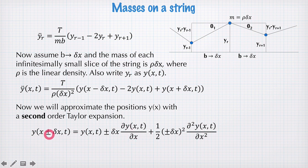So depending on whether you're plus or minus δx here, you get a plus or minus here. Then we have a half times the square of plus or minus δx and the second partial spatial derivative of y. Now this sign here goes away because of the squared here.